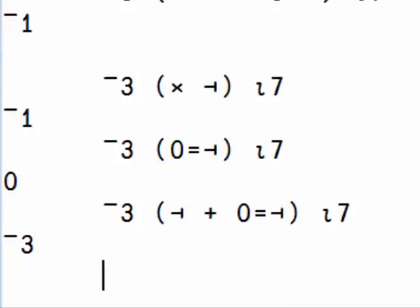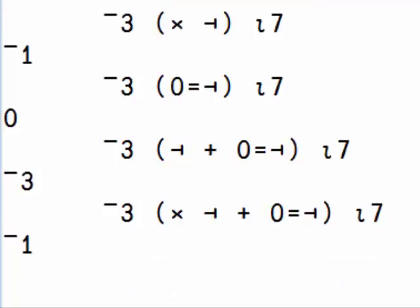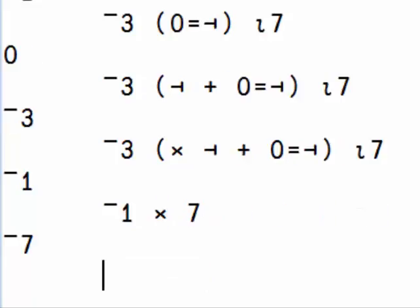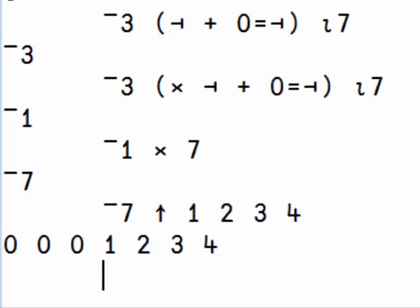In this case, we add nothing. We still get a minus 3. And by taking the sign, we get a minus 1. And by multiplying by the shape, we get a minus 7, which we can use to get the right answer.